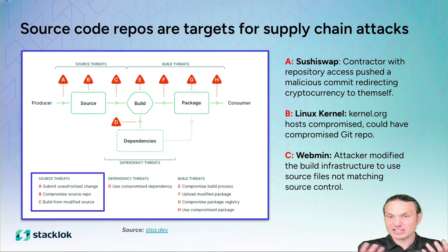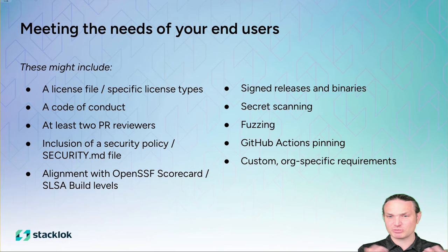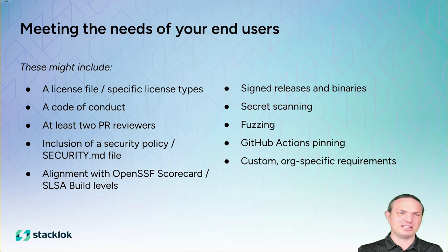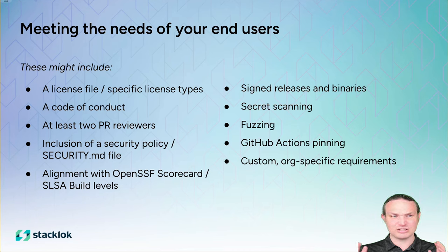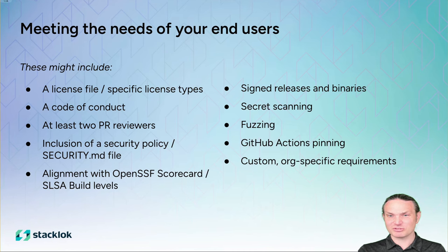Tools like Sigstore can help you recognize that you're using a bad package. There's a lot of stuff that we put in these repos — this is the heart and soul of your open source project. You may need license files, license checks, code of conduct, security files, PR reviewers, and CI configuration. When you've got a hundred repos, you've got to do that a hundred times and get it right each time.